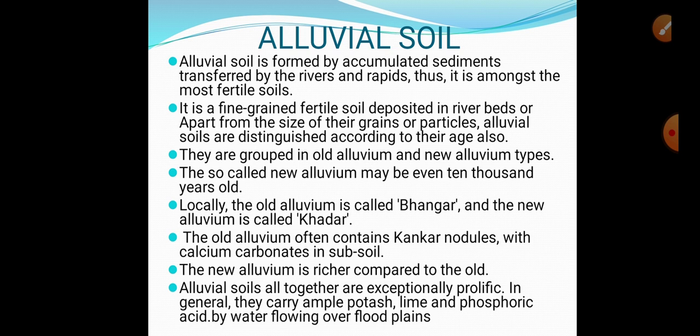Revisiting alluvial soil — these are found in the northern plains due to the three Himalayan rivers. They are grouped into old alluvium and new alluvium types. The so-called new alluvium may be even 10,000 years old. Locally, the old alluvium is called Bangar and the new alluvium is called Khadar. Old alluvium, far away from the river bank, is Bangar; new alluvium, near to the river bank, is Khadar. The old alluvium often contains concretion nodules with calcium carbonates in subsoils. The new alluvium is richer compared to the old.